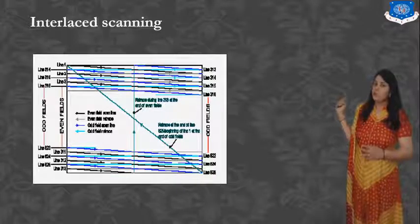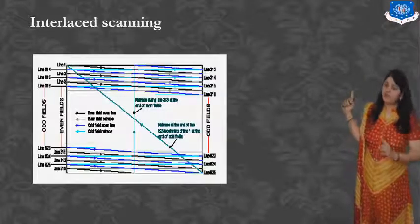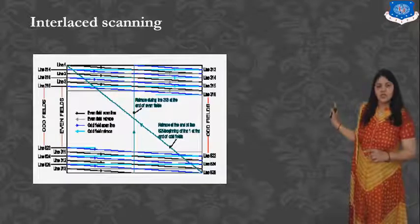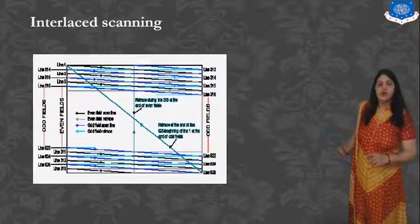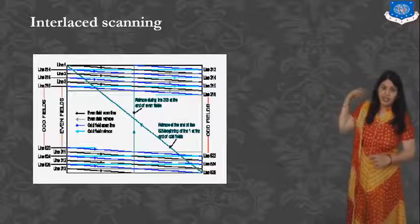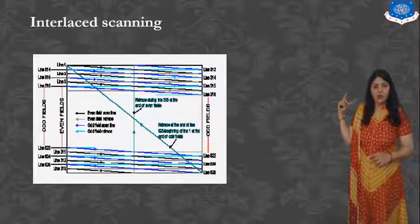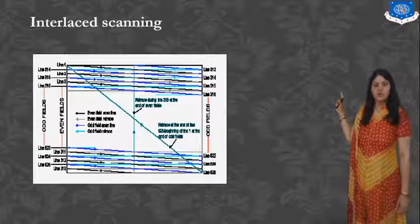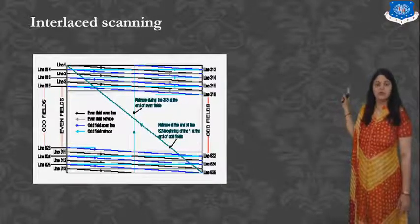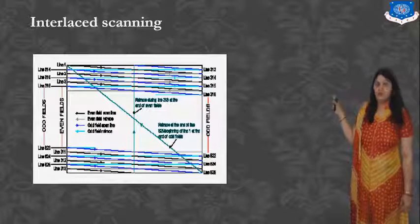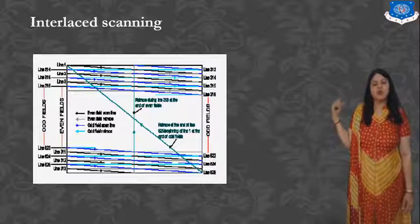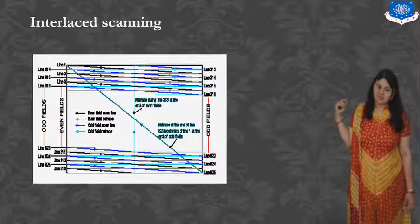When 312.5 lines are completed — meaning the end of any one field — the cursor goes back from the bottom to the top. When it returns to the top, scanning resumes from line 313, 314, and so on. This way, the time is also reduced.